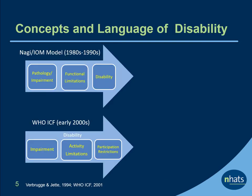Since that time, models of disability have attempted to incorporate both medical and social perspectives. The Institute of Medicine, or IOM, proposed a model sometimes referred to as the NAGI model of disablement. This model dominated most of the research studies that began in the 1980s and 1990s in the U.S. The model posited that pathology and impairment at the organ level can lead to person-level functional limitations or difficulty with basic movements like walking, bending, and reaching, which may in turn lead to disability.